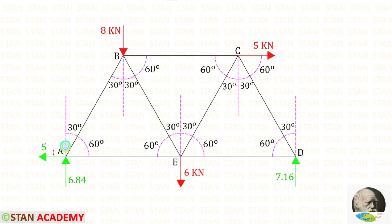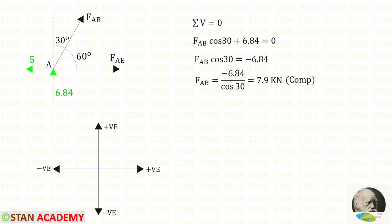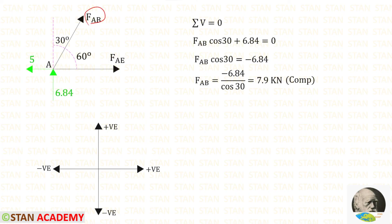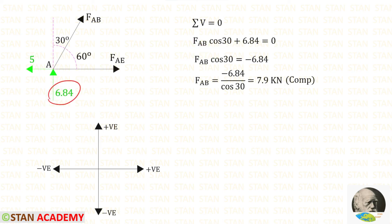Now let us take joint A. At joint A, we have forces FAE and FAB, plus the vertical and horizontal reactions. FAE has already been found, so we only need FAB. Applying sigma V = 0: to make FAB vertical we need 30°, so FAB × cos 30 acts upwards and is positive. The vertical reaction also acts upwards and is positive. Solving gives a negative value for FAB, meaning FAB is compressive.